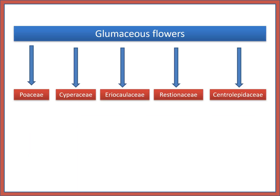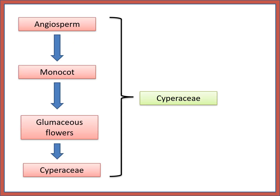In glumaceous flowers, the important families are Poaceae, Cyperaceae, Juncaceae, Restionaceae, and Centrolepidaceae. You can observe that if we talk about Cyperaceae: first angiosperm, then monocotyledon, then glumaceous flower, then Cyperaceae family.